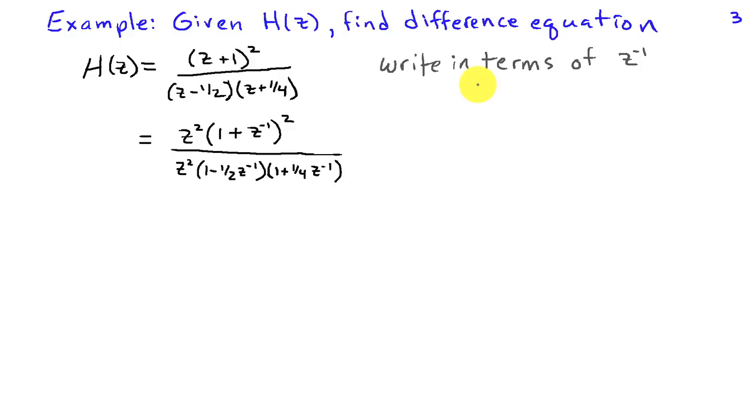So we're going to factor z squared out of the numerator and out of the denominator, and that leaves us with 1 plus z inverse quantity squared in the numerator. And then in the denominator, we'll have 1 minus 1 half z inverse times 1 plus 1 fourth z inverse. So we can see from this expression that we have zeros at z equals minus 1, and there's two of them associated with this squared term here. And then we have poles at z equals 1 half and at minus 1 fourth due to the two terms in the denominator.